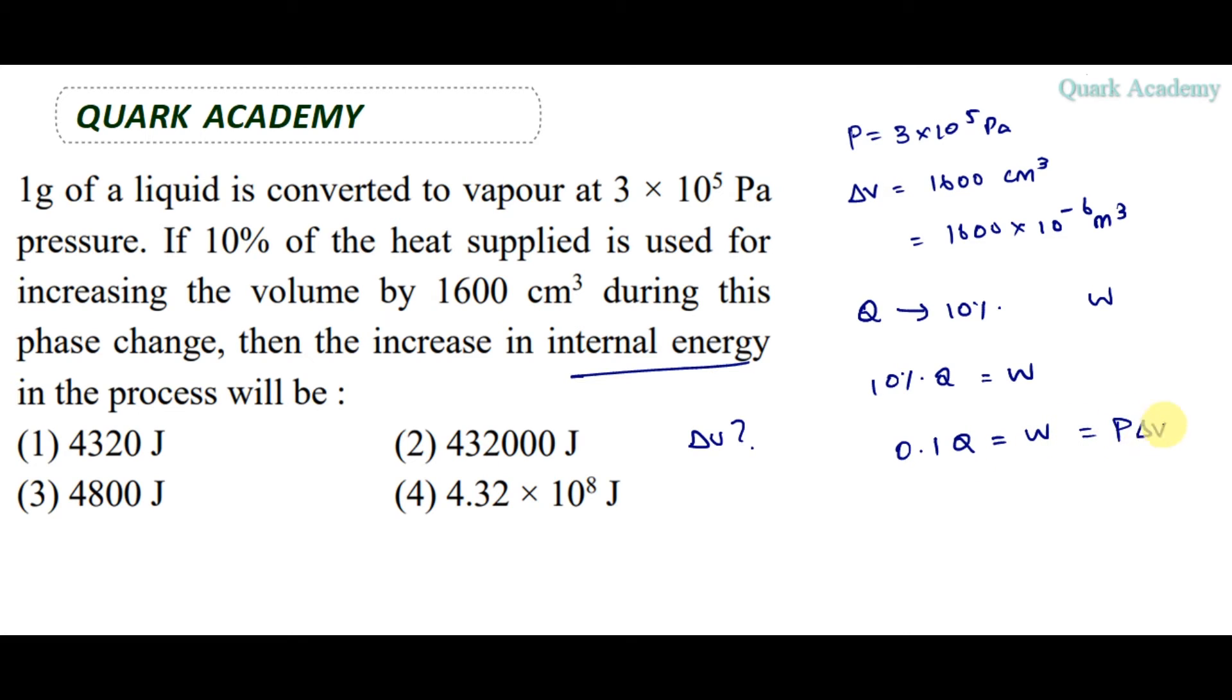Work done equals pressure times change in volume. So 3 × 10^5 × 1600 × 10^-6 equals 480 joules.